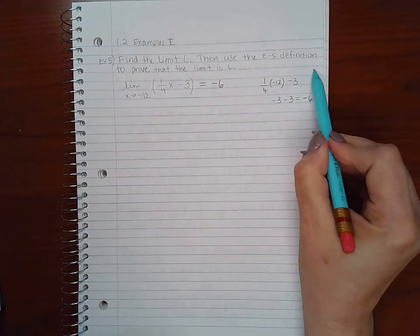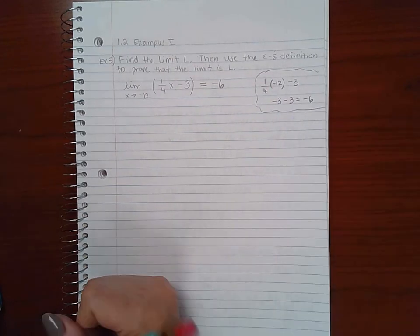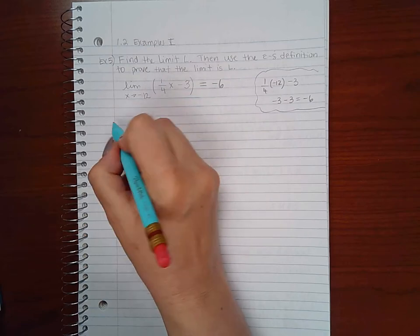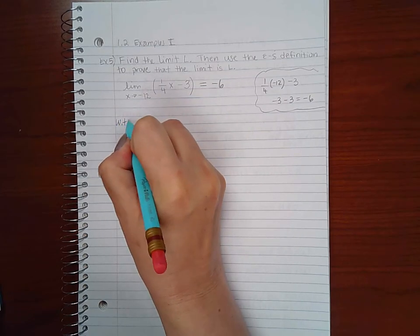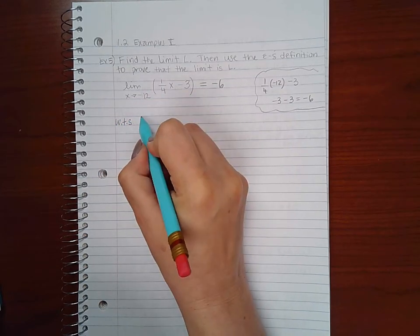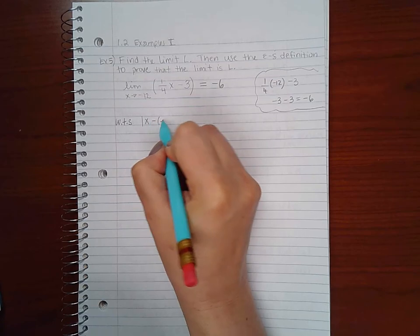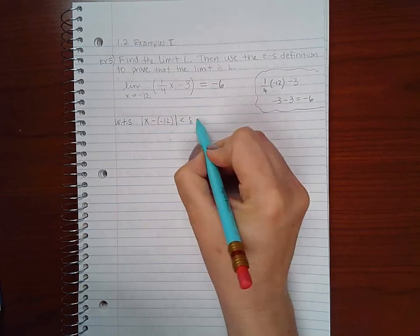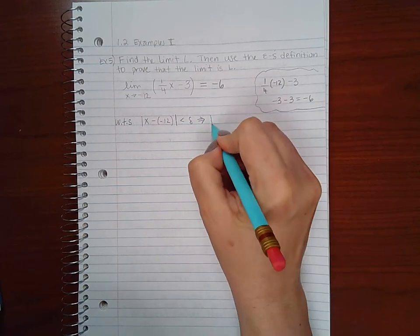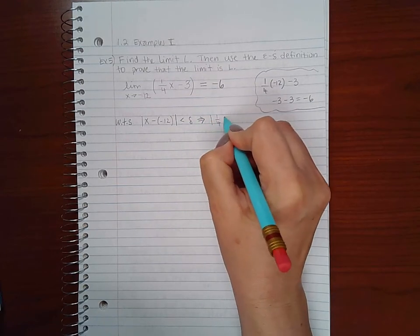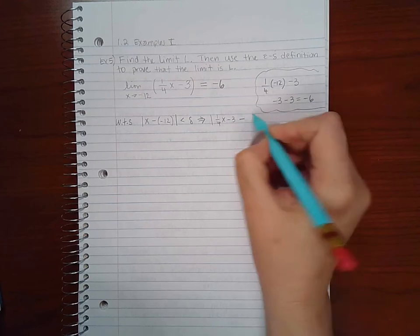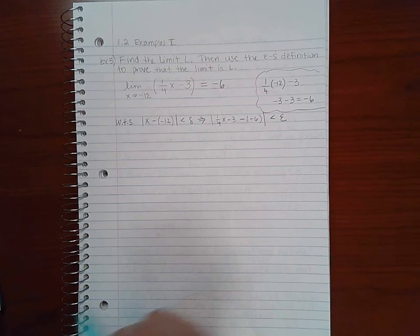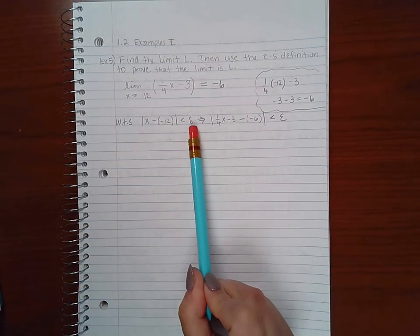Now for my definition, I want to show that for |x minus negative 12| (my c value) less than delta, I will get |my function minus my L (my limit)| less than epsilon. So we need to go figure out what this delta should be first.